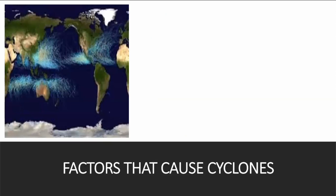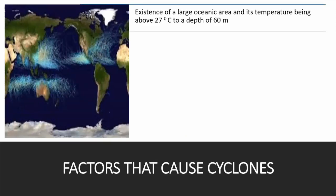Factors that cause cyclones. Most of the cyclones originate in the atmosphere closer to oceanic areas. Therefore, the existence of a large oceanic area and its temperature being above 27 degrees Celsius to a depth of 60 meters is a factor that causes cyclones.